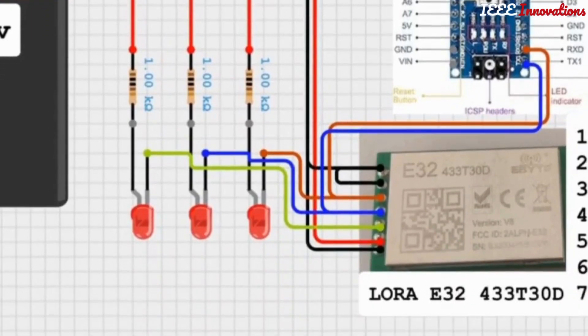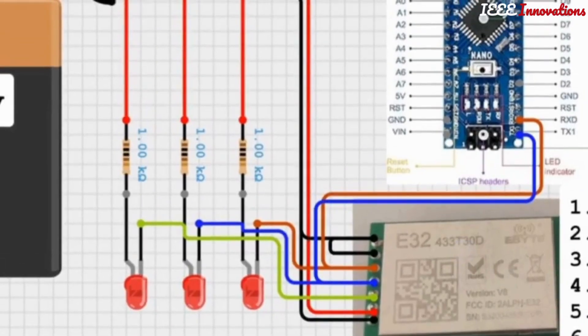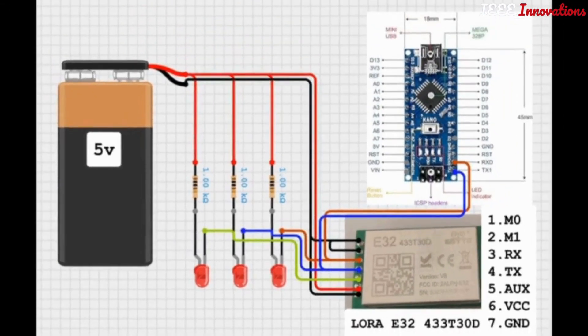Whenever we transmit or receive the data, the corresponding LEDs of RX and TX will indicate that it's transmitting the data.